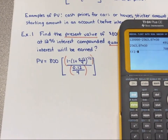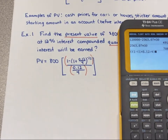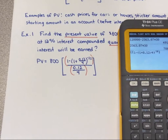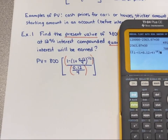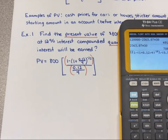Enter it as: one minus, open parentheses, 1 plus 0.12 divided by 4, close parentheses, raised to the negative 28 power. Then close off the numerator and divide by 0.12 divided by 4 for the denominator. Don't forget your final closing bracket. Notice the calculator connects it to the original open bracket.